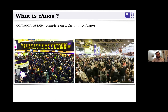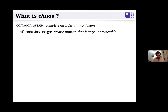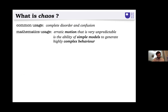This is how we use the word chaos in daily life. However, in mathematics, when we talk about chaos, we normally refer to something slightly different, although it's related to this idea of disorder. In mathematics, chaotic systems are characterized by a very particular type of motion that is erratic, irregular, and very unpredictable. Another possible definition is the ability of simple models to generate highly complicated and complex behavior.